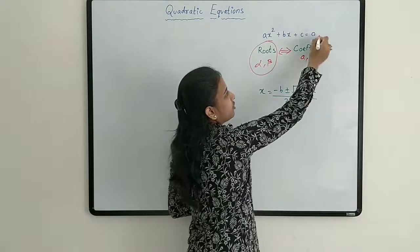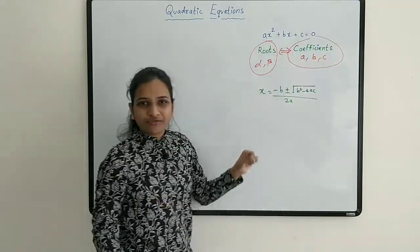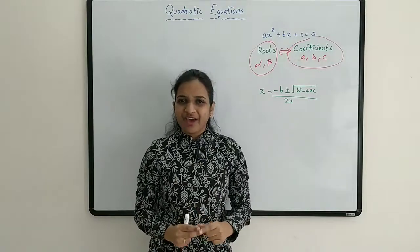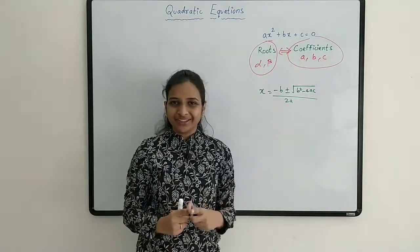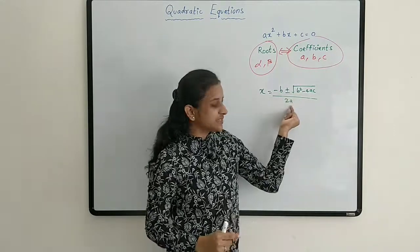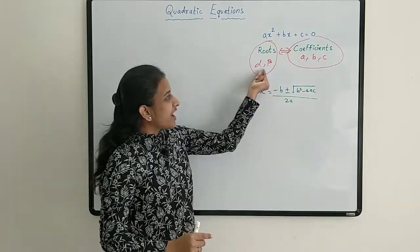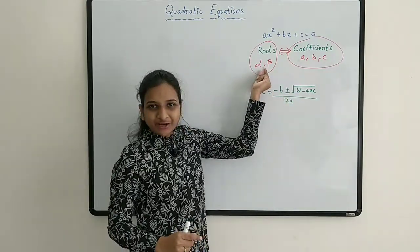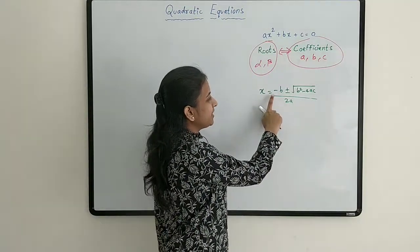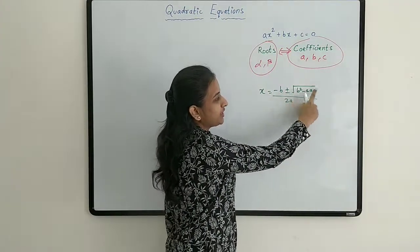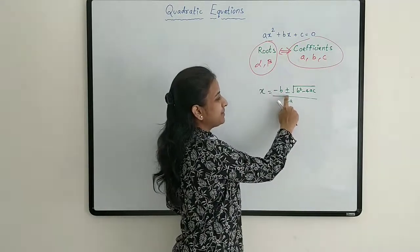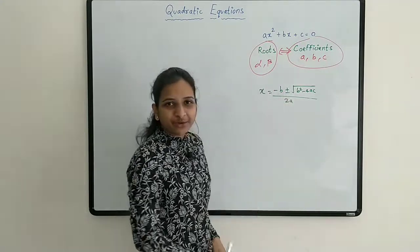In my previous video we already saw the formula to find the roots: minus b plus or minus square root of b² minus 4ac, all divided by 2a. So if alpha and beta are the roots, alpha will be (-b + √(b²-4ac)) / 2a, and beta will be (-b - √(b²-4ac)) / 2a.